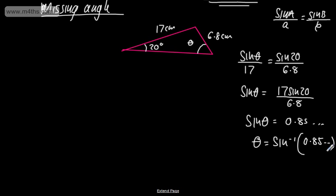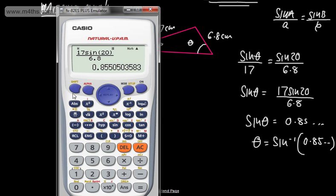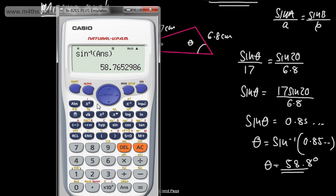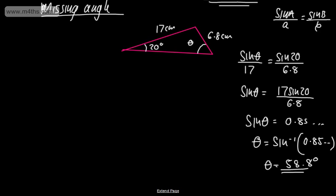Taking shift sine — inverse sine of my answer — that will give me the angle. It's 58.7... so theta is going to be equal to 58.8 degrees to one decimal place. Let's just check I've rounded that correctly: 58.8 to one decimal place.